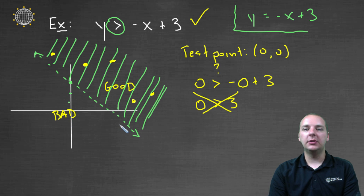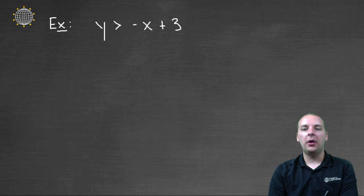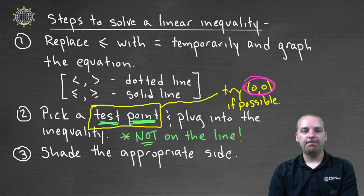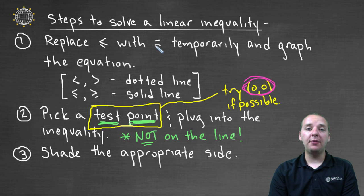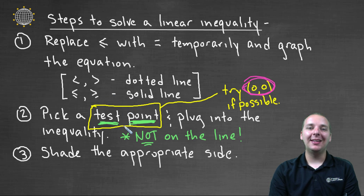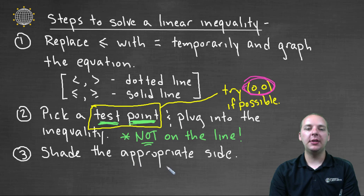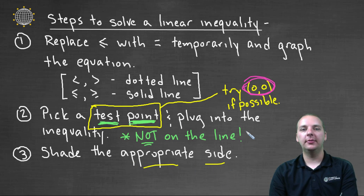So that's how we solve a linear inequality: graph the equation with a solid or dotted line, pick a test point, and use that test point to shade the appropriate side.